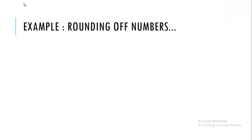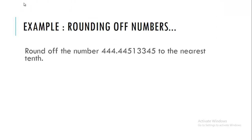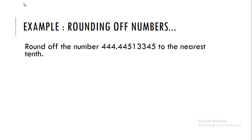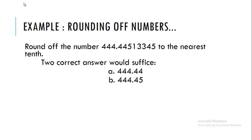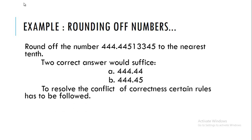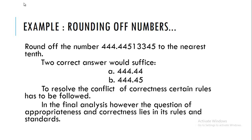Example: Rounding off numbers. Round off the number 444.44513345 to the nearest tenth place. Two correct answers would suffice: A) 444.44 or B) 444.45. To resolve the conflict of correctness, certain rules have to be followed. In the final analysis, the question of appropriateness and correctness lies in its rules and standards.